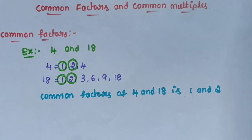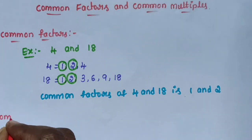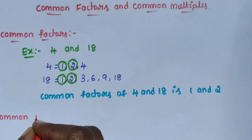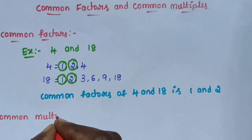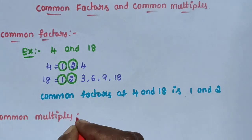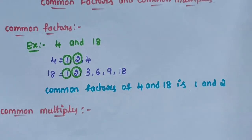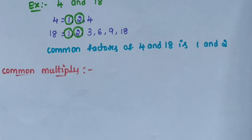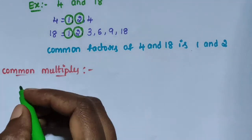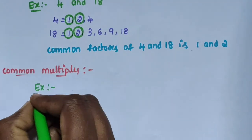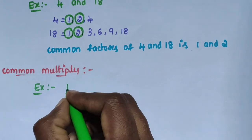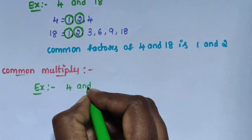Next is common multiples. How to find out common multiples using two numbers? For example, 4 and 6.